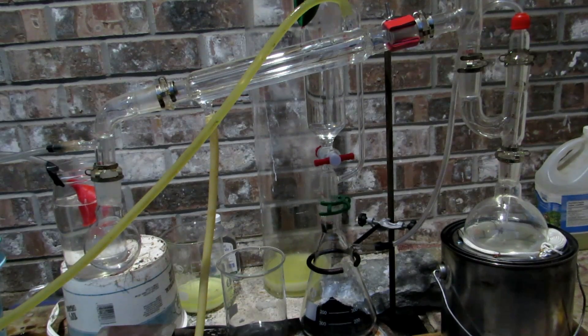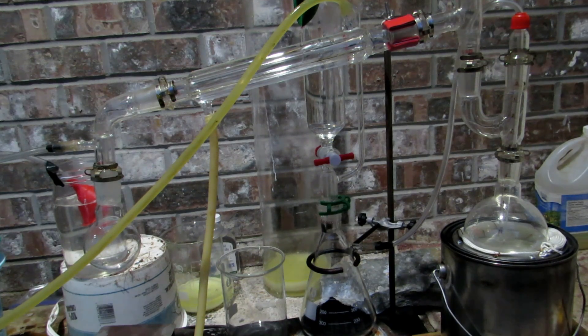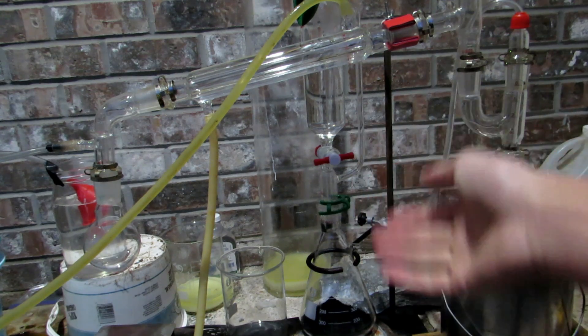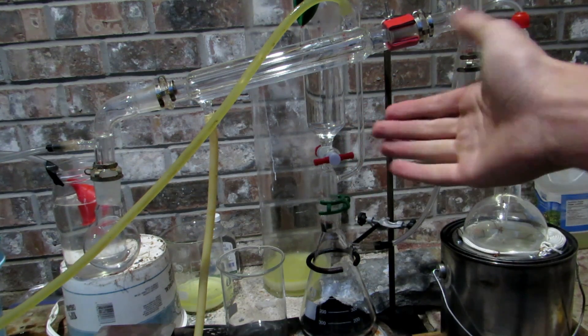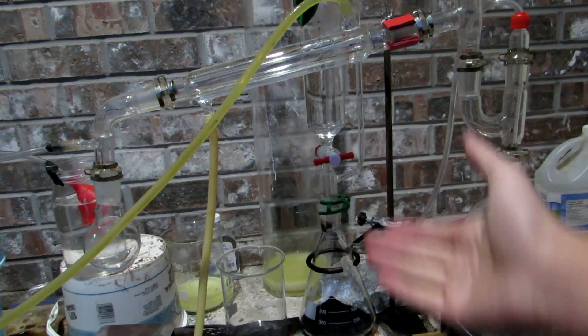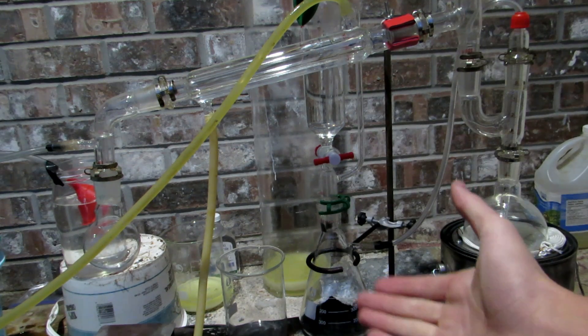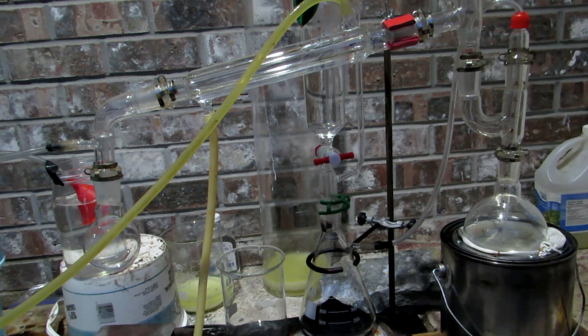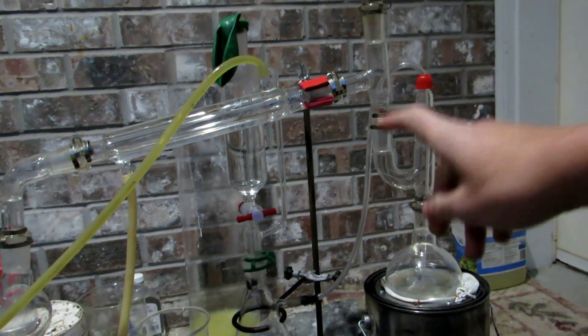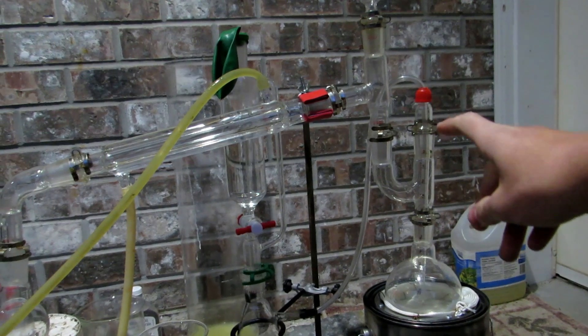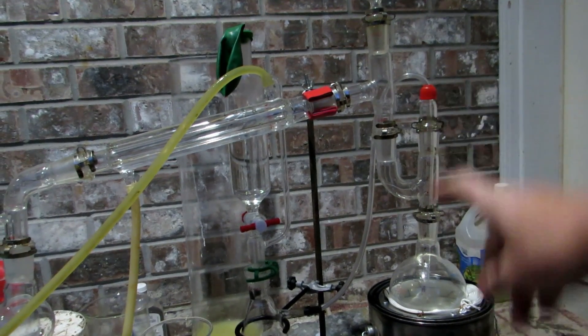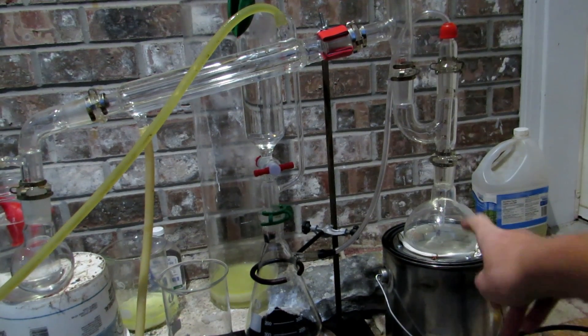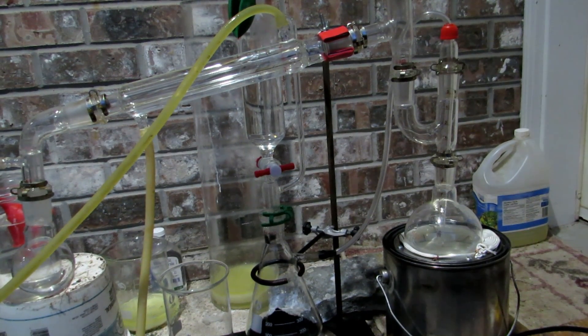So we have all of our apparatus set up here as you can clearly see. It is rather complicated but not too bad. We have a gas generator with an addition funnel on top and it's totally sealed and there's our hydrochloric acid in there. We've loaded the manganese dioxide into the bottom and a hose has been attached which runs into the top of our apparatus. It's then attached to a glass tube which goes all the way down into our solution and bubbles through our solution of potassium bromide which is in this 500 milliliter round bottom flask.